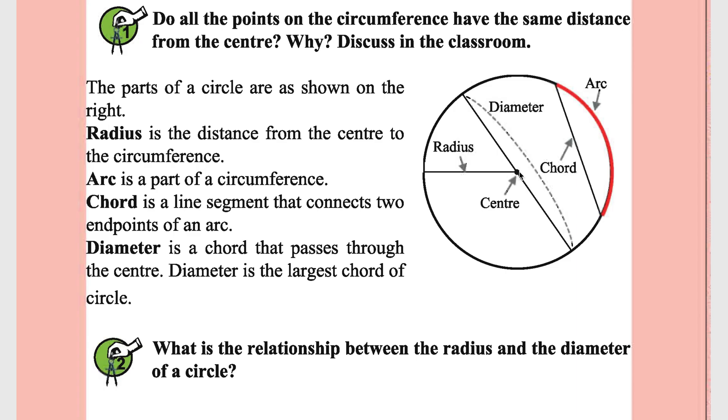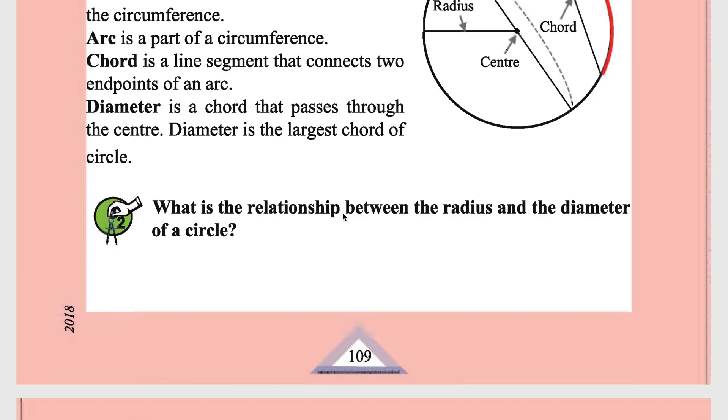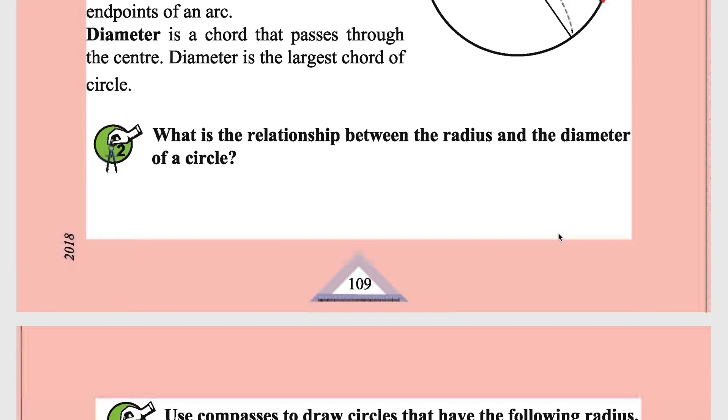Diameter is a chord that passes through the center. Diameter is two times that of the radius. From here to here is radius, and from here to here is also radius. So diameter is two times the radius. That is the relationship between radius and diameter.